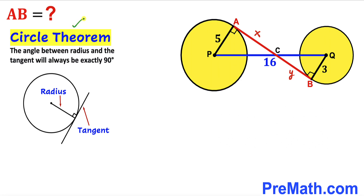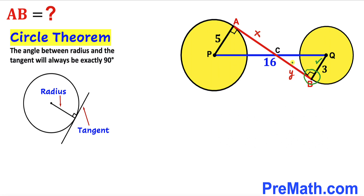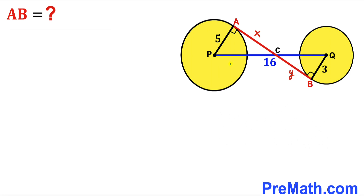Let's recall the circle theorem: the angle between the radius and the tangent line is always 90 degrees. Returning to our problem, this is our radius and this is our tangent line, so this angle is 90 degrees. Likewise, this other angle is also 90 degrees, since that too is a radius meeting the tangent line.